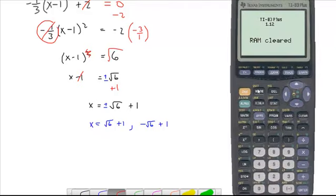Okay, so you're not supposed to have a calculator, but I'm still going to show you. If I do square root of 6 plus 1, that'll give me 3.449.